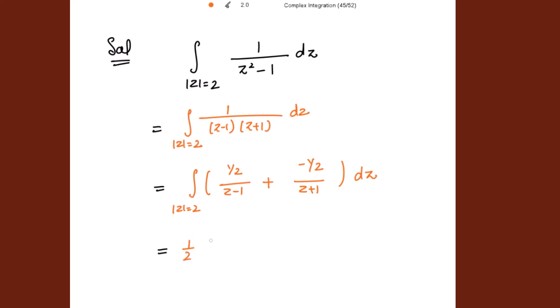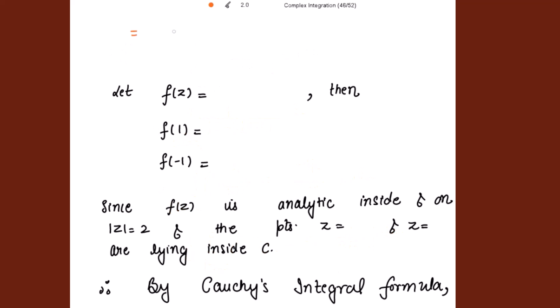This becomes 1 over 2 times the integral over |z| = 2 of 1 over z minus 1 plus 1 over z plus 1, dz. Splitting this integral, we get 1 over 2 times the integral of 1 over z minus 1 dz plus the integral of 1 over z plus 1 dz, both over |z| = 2.